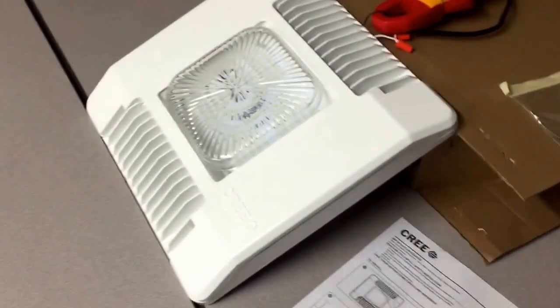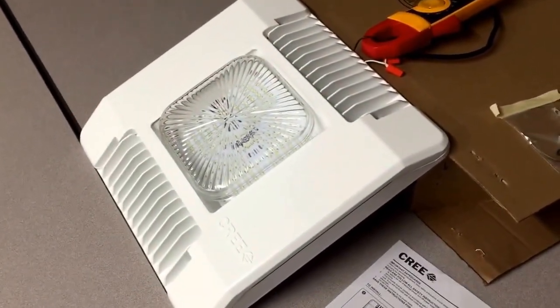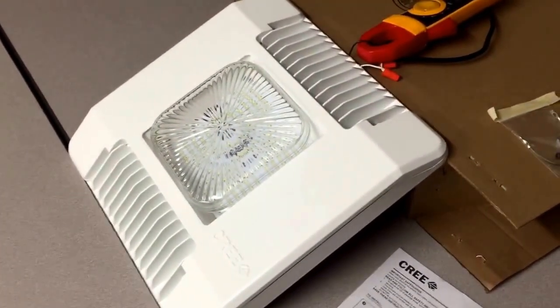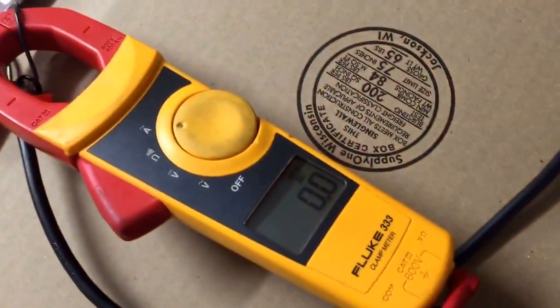A lot of your old school lights with big bulbs, HID bulbs, were 220 or 240 to 277. And this just doesn't draw as much amperage, so you can wire it in for 120. I also have an amp clamp on here. I'm going to show you the amperage this thing draws whenever I fire it up. So let's do that real quick.